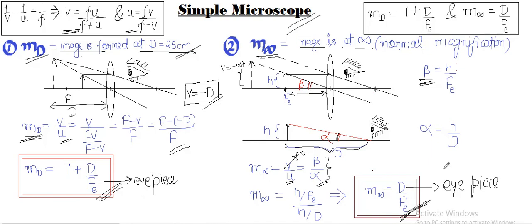Remember this magnification is also called normal magnification because our eye can look clearly very easily at something placed at infinity. We will use both these two formulas in compound microscope and telescope.